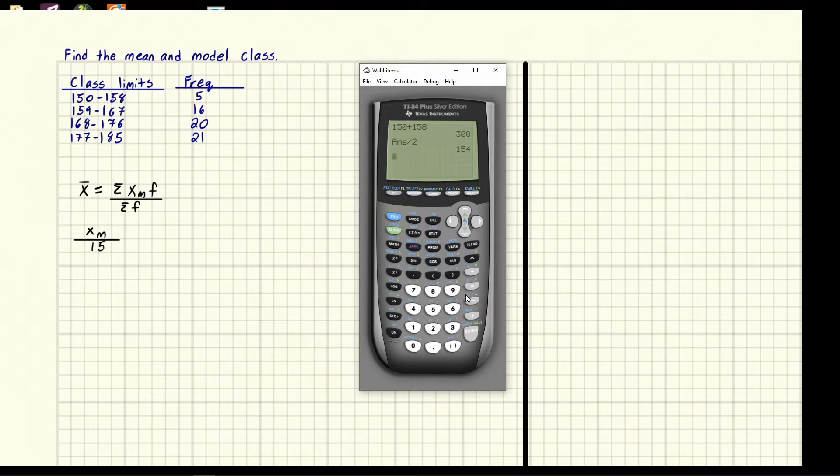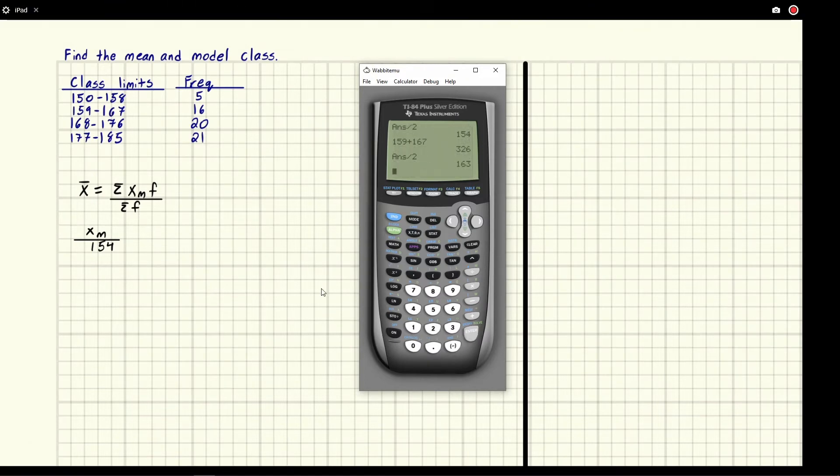You may be able to do this just by looking at it but for those of you that want to use calculator it's a little more relaxing I think to push the calculations off to a calculator. So we're going to go to 159 plus 167. We're going to get the next midpoint just these two. I'm going to get a number and then we're going to divide that number by two. We get 163 is our next number.